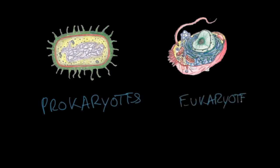Prokaryotes and eukaryotes are types of cells, and as you know from basic biology, every living thing or organism is made of cells. It's the basic building block of every living organism. So if you understand the main characteristics of prokaryotes and eukaryotes, you will be able to understand how these organisms work and function.